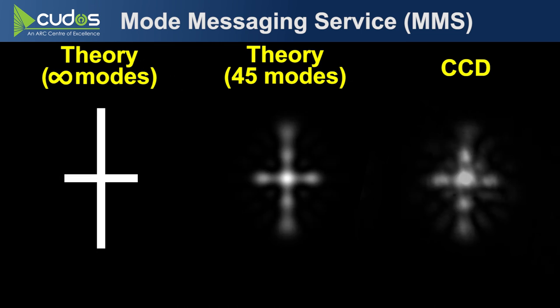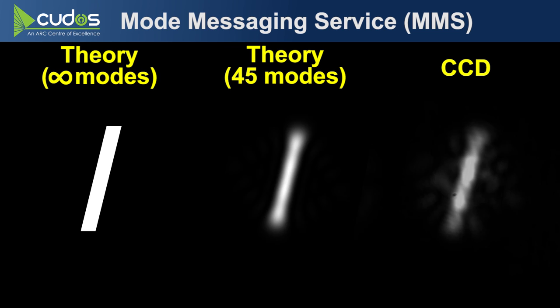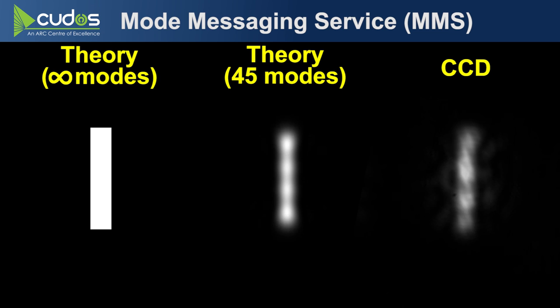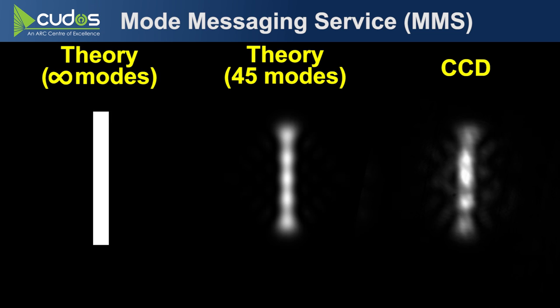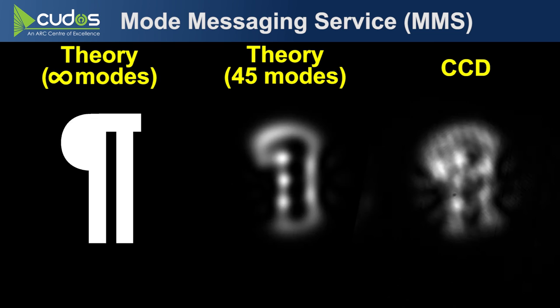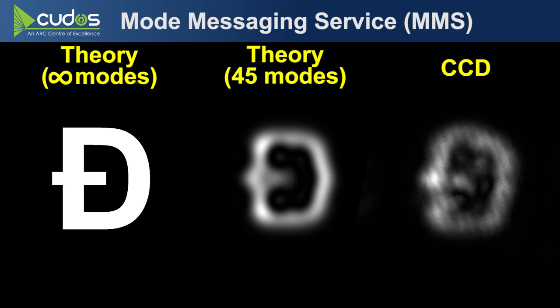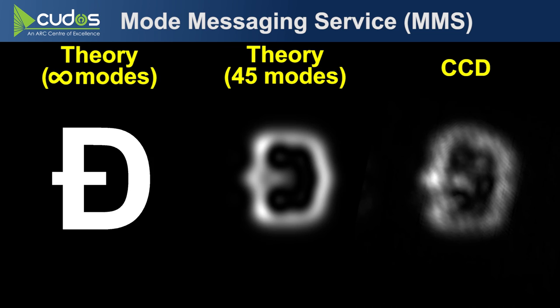And then finally, I've got the system set up such that you can type characters on the keyboard and it will print them to the far end of the fiber in the desired polarization. That's what we're looking at here. It's spitting out all 256 ASCII characters in Arial font. On the left, we've got the goal. That's what you could do if you had an infinite number of modes. In the middle, we've got theoretically the best you could possibly do given the 45 spatial modes that this fiber supports. And on the right, we've got what's actually observed on the camera in the lab at the output of the fiber.